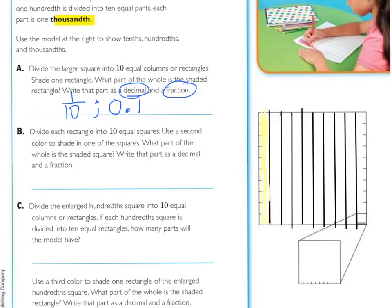The next step, they said to divide each rectangle into ten equal squares, and use a second color to shade in one of the squares. To divide it into ten equal squares, they're meaning each little rectangle, so that'll be like this, adding in horizontal lines throughout the whole thing. Press pause and do so.